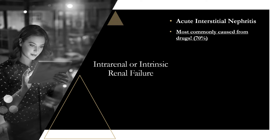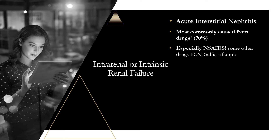The first type of intrinsic renal failure is acute interstitial nephritis (AIN). As soon as you see AIN, think of a medication — that accounts for 70% of cases. On exams, the vignette will most likely involve a drug. The most common medication causing AIN is NSAIDs, though penicillin, sulfa drugs, and rifampin are also implicated.